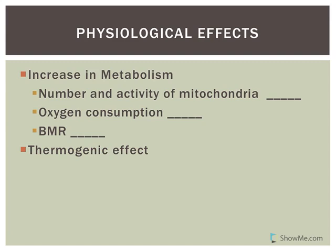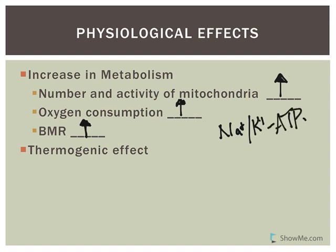A major effect is on metabolism. There is a receptor for T3 in the mitochondria, and one of the things thyroid hormones do is increase the number and activity of mitochondria. Mitochondria are responsible for ATP synthesis, so ATP production increases. To make ATP, you have to consume oxygen, so oxygen consumption goes up. Overall, your basal metabolic rate — your BMR — will increase. Thyroid hormones also increase the sodium-potassium ATPase, and a large amount of your energy is utilized for the sodium-potassium pump, so this tends to overall increase metabolism.